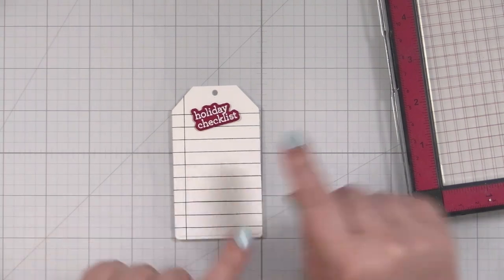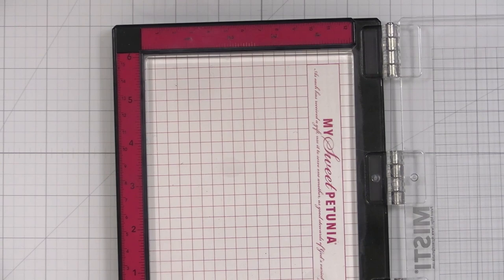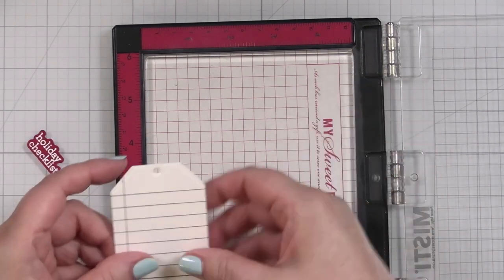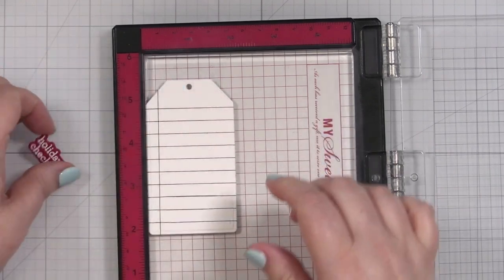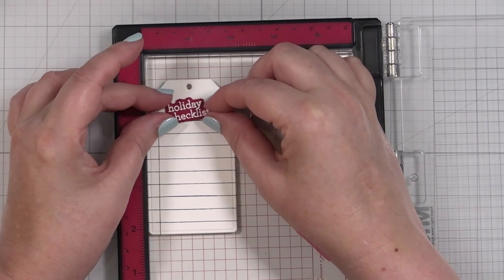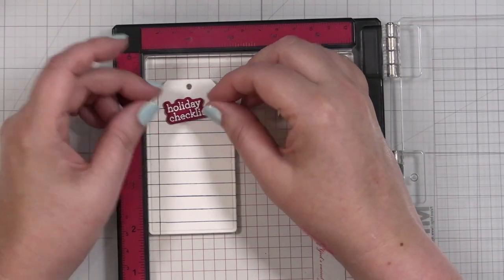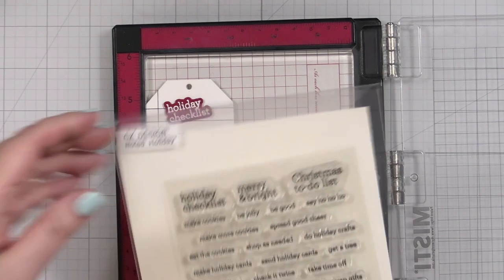Both turned out great. I think I'm going to go with my little holiday checklist, and you can hand stamp this really quickly. You kind of figure out the placement. It can be straight, but I think it's cute at a little angle. Then all you're going to do is add whatever elements you want on your checklist.